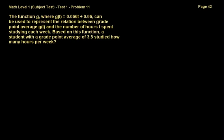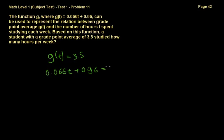Problem 11: the function j(t) equals 0.066t plus 0.96 represents the relation between grade point average j(t) and the number of hours t spent studying each week. A student with a GPA of 3.5 studied how many hours per week? Since the GPA is j(t), we set j(t) equal to 3.5, so 0.066t plus 0.96 equals 3.5.